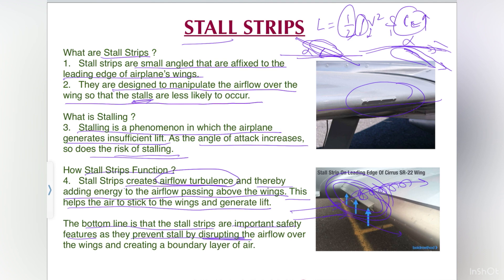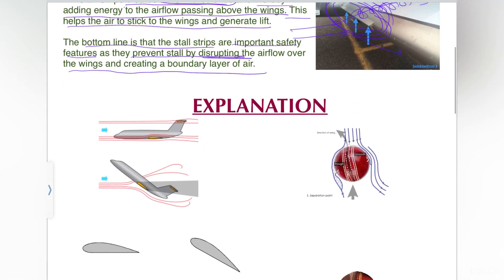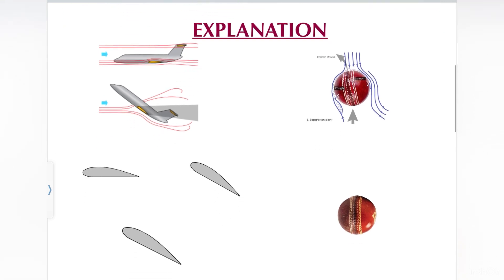The bottom line is that stall strips are important safety features as they prevent stall by disrupting the airflow — specifically by creating airflow turbulence over the wing and creating a boundary layer of air. I hope a little bit about stall strips is understood, and I will now be explaining further using some pictures and illustrations.